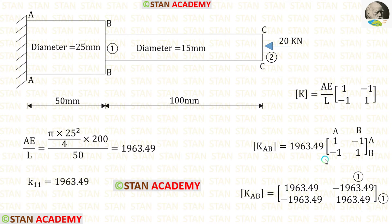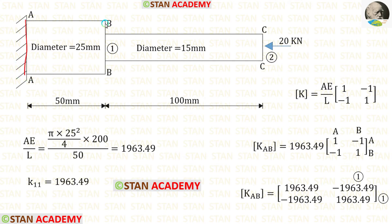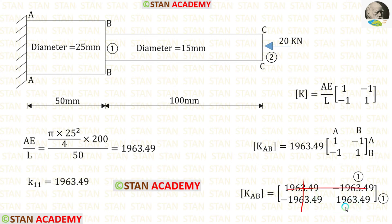In the element stiffness matrix for AB, the first row and first column represent displacement at AA, and the second row and second column represent displacement at BB. Since we have no coordinate at AA but have the first coordinate at BB, we mark the second row and second column as 1,1. We strike out the first row and first column, leaving only the element K11.